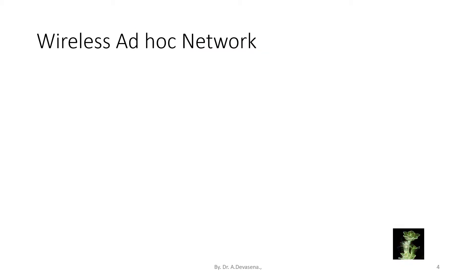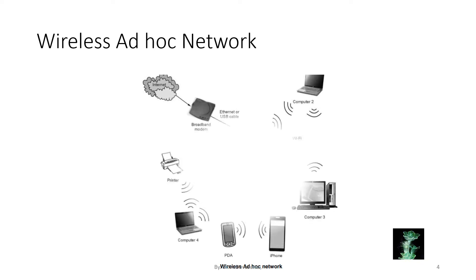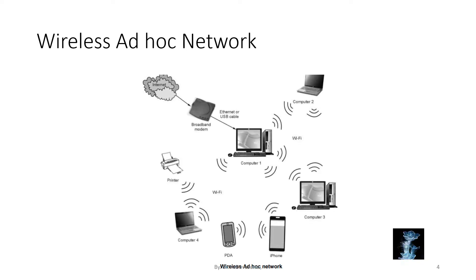Here is a representation of a wireless ad hoc network. In this diagram, from the internet through the broadband modem, computer one is connected through an Ethernet or USB cable. From computer one, through Wi-Fi, other devices like computer 2, computer 3, smartphone, iPhone, PDA, and printer have been connected. These things have been done with the help of the ad hoc network concept.